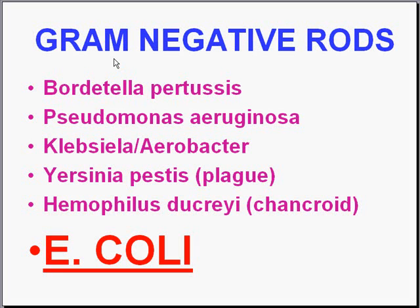Often the term gram-negative rod or gram-negative bacilli is used as gram-negative infections too. When they are, they almost always refer to bacilli and not that single gram-positive cocci called Neisseria. Because it's such a wide spectrum of diseases, the gram-negative rods cause a wide variety of gastrointestinal, pulmonary, and urinary tract infections. The list is almost always headed by E. coli, which is the most ubiquitous, the most universally disease-causing bacteria, it seems.